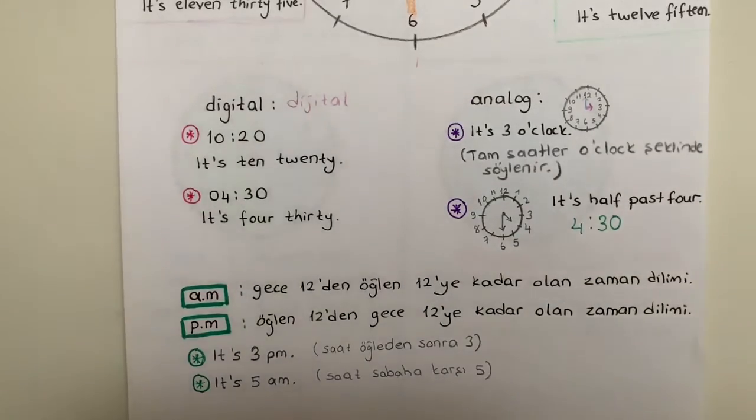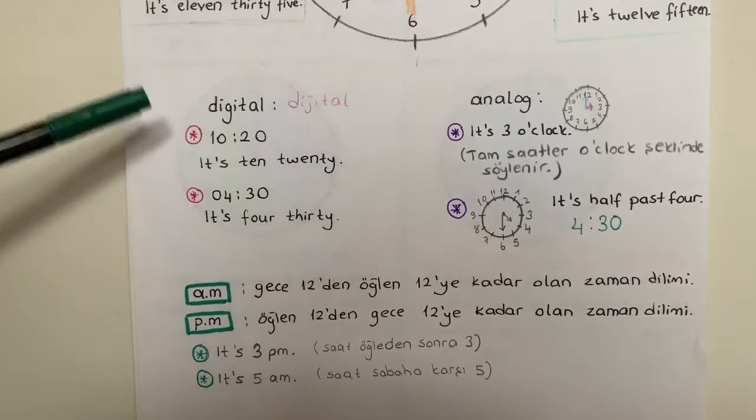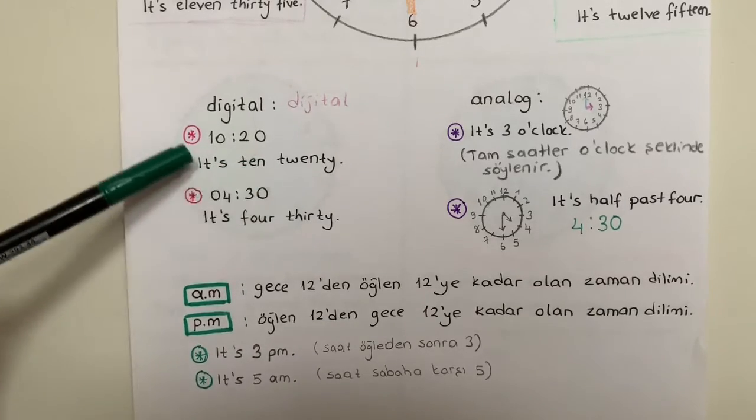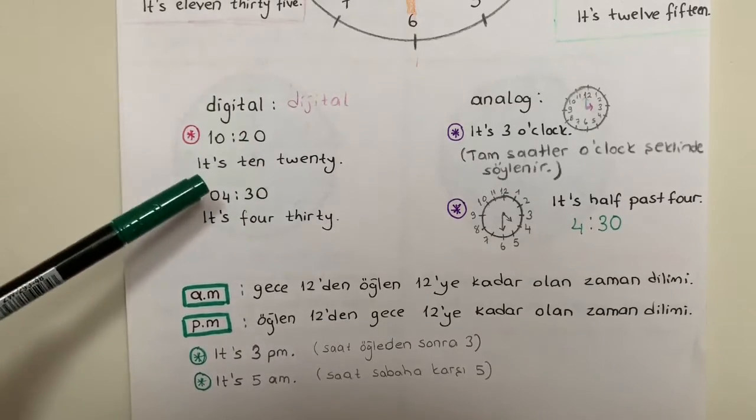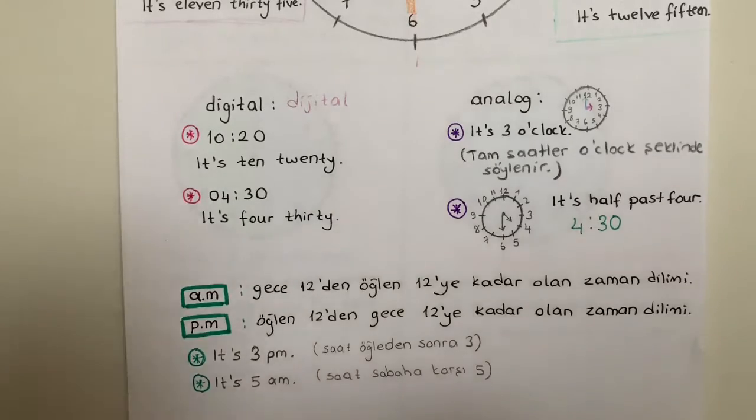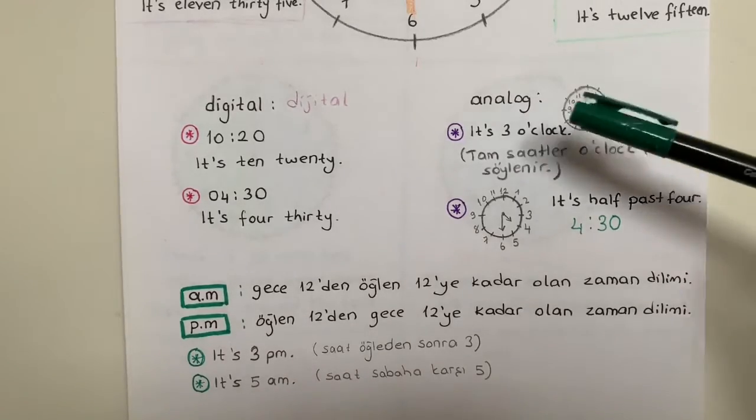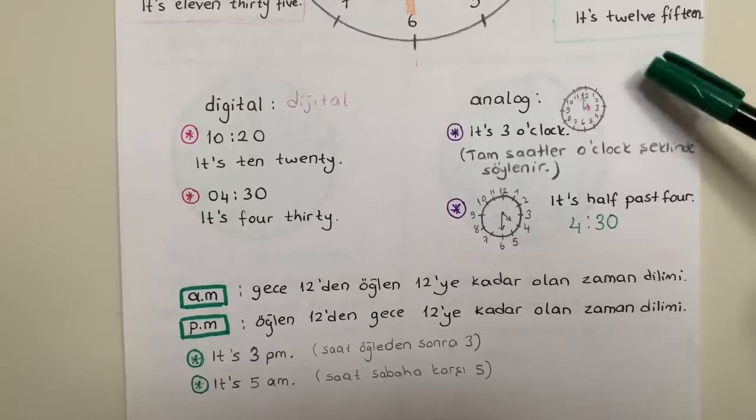benim iki türlü olarak söyleyebiliyordum saatimi. Dijital olarak söyleyebiliyordum - dijital olarak söylediğim zaman direkt gördüğüm sayıyı söylüyordum: ten twenty, four thirty. Ama eğer analog olarak söylersem, tam zamanlarda, eğer tamsa saatim, o zaman o'clock kullanıyordum. Bunu hatırlayalım.